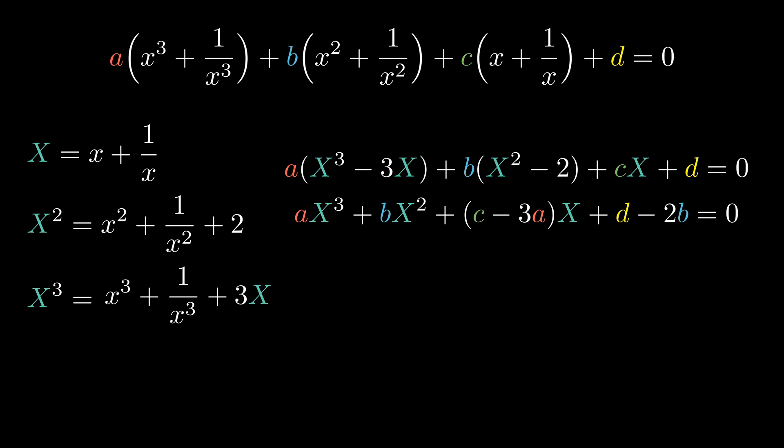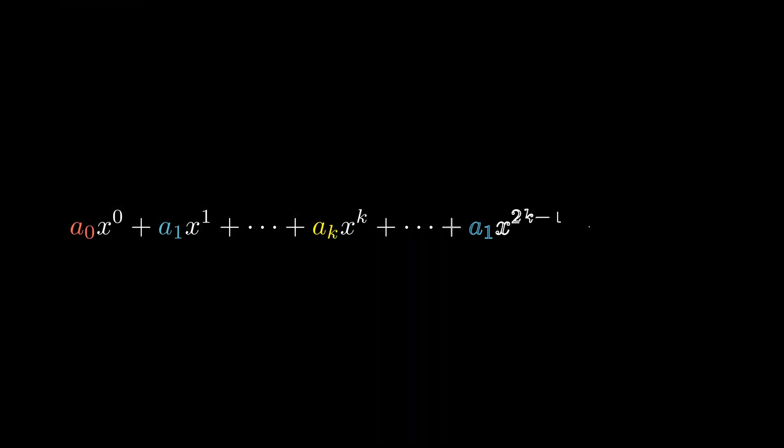It seems that, when the coefficients are symmetrical, we can divide the degree of the polynomial by 2. But how can we be sure that the variable change will always work out nicely as it did here? Here, we can try to generalize the idea.